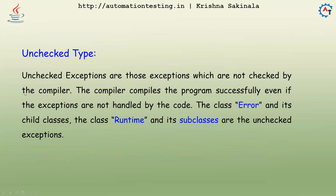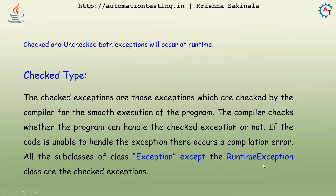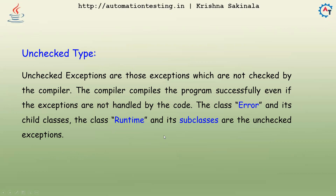Unchecked exceptions are those exceptions which are not checked by the compiler. The compiler compiles the program successfully even if the exceptions are not handled by the code. The class Error and its child classes, and the RuntimeException class and its subclasses, are the unchecked exceptions. These are not checked by the compiler — if you have an issue, it will still compile without any problems.